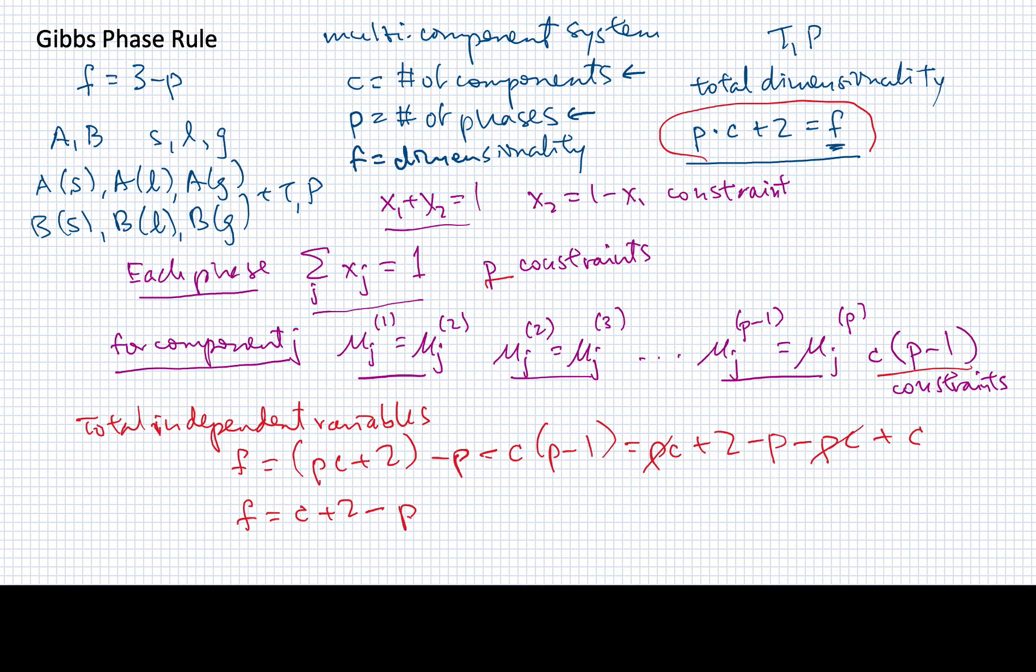Now, if we've done this right, this should give us, for a one-component system, the same result that we had before. And, indeed, for a one-component system, I would get the number of degrees of freedom is just 3 minus p. So this does look like it checks out.